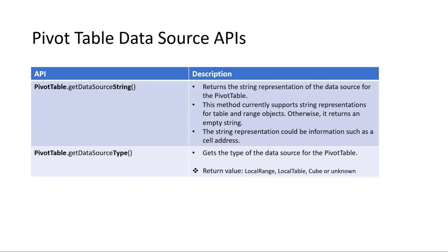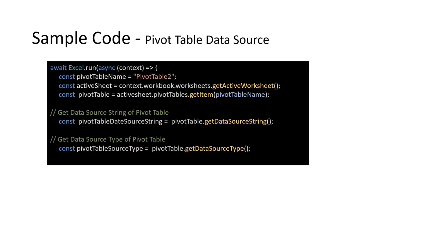We're also adding pivot table data source APIs, very similar to the chart series — string and the type — so you can figure out if that pivot table is generated from a table or a range, and see the address or table name, and again, act accordingly. And there's some source code shown there as well.